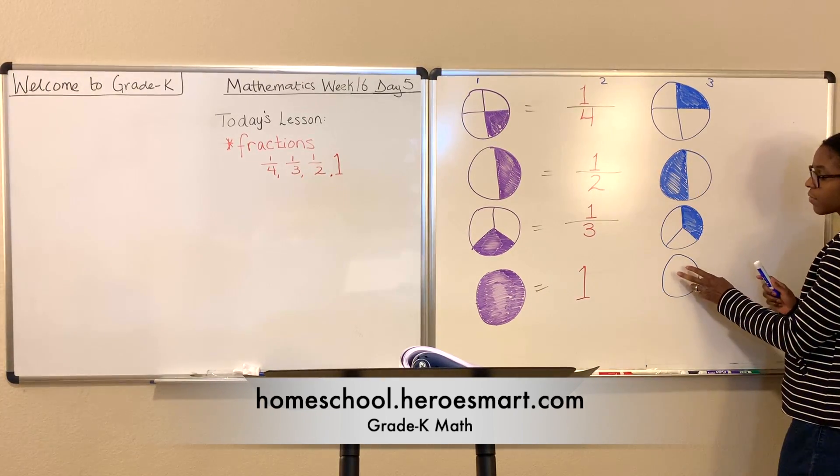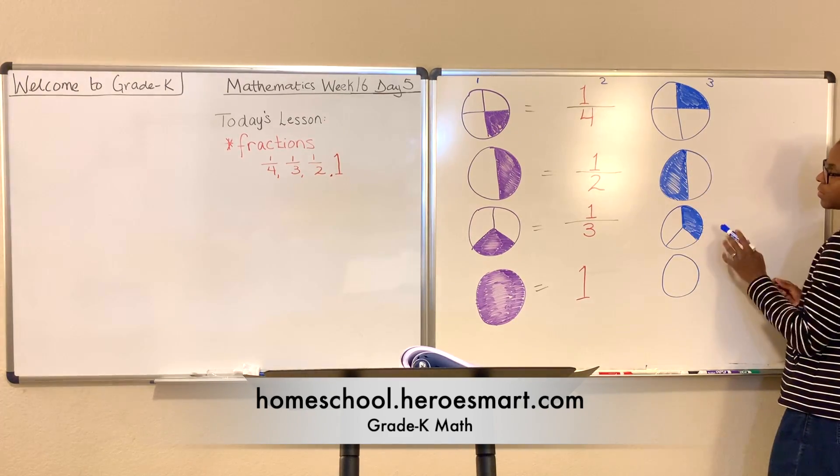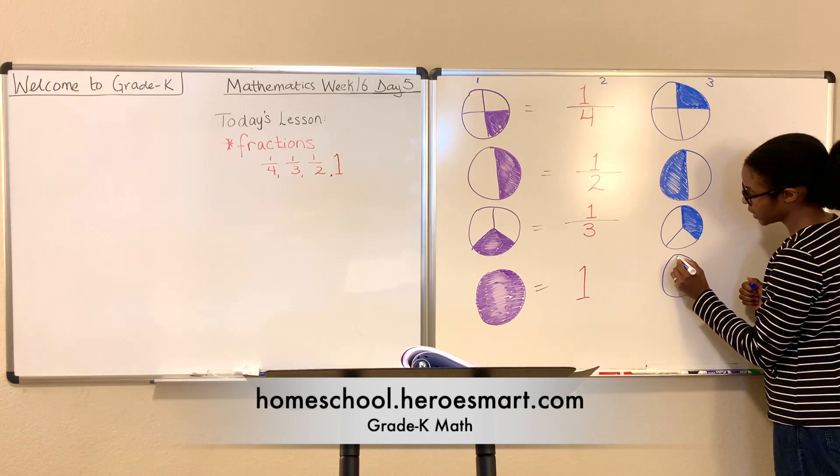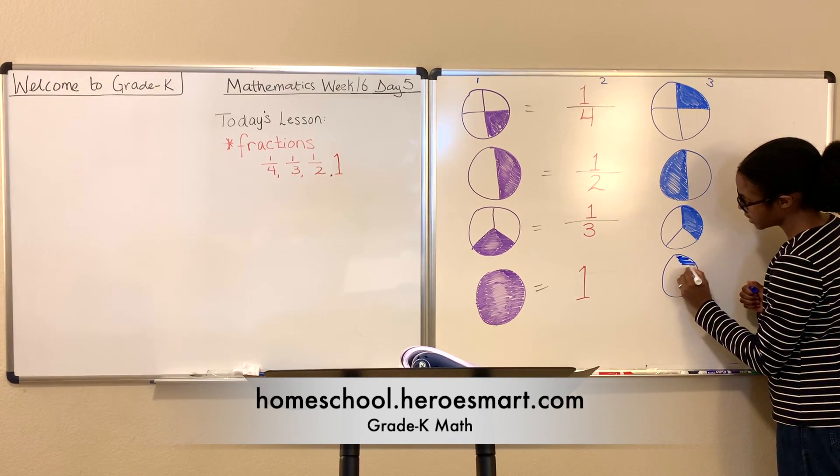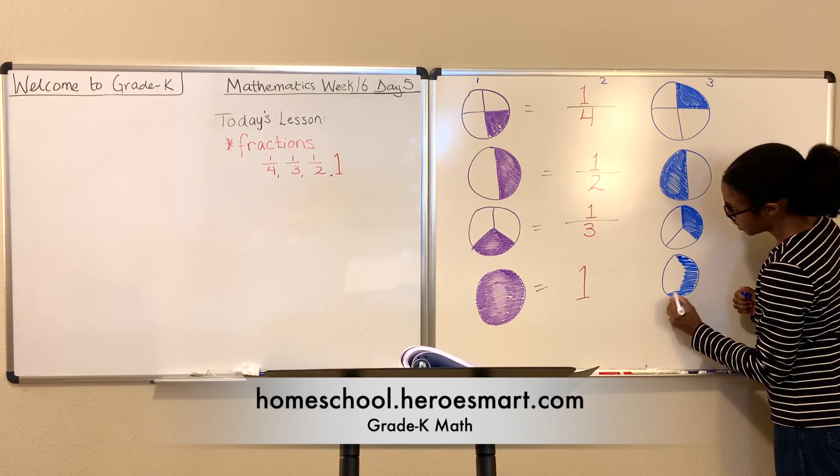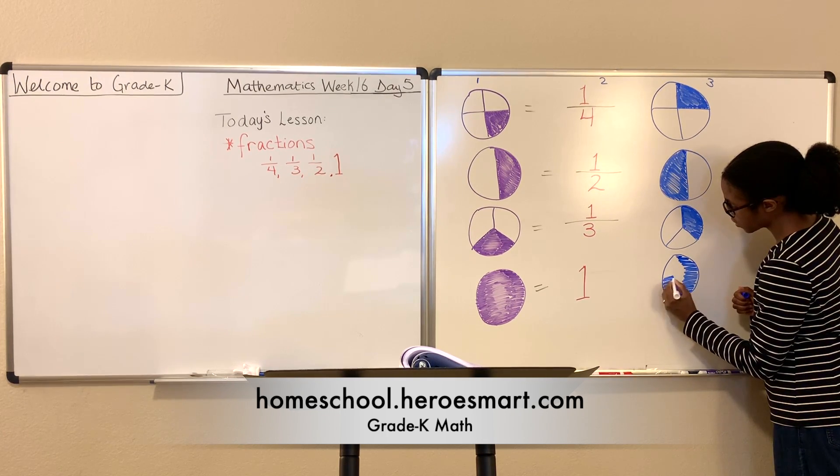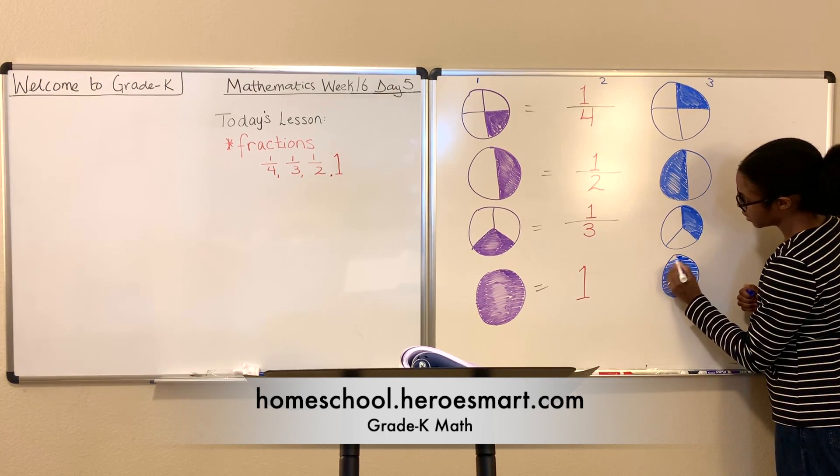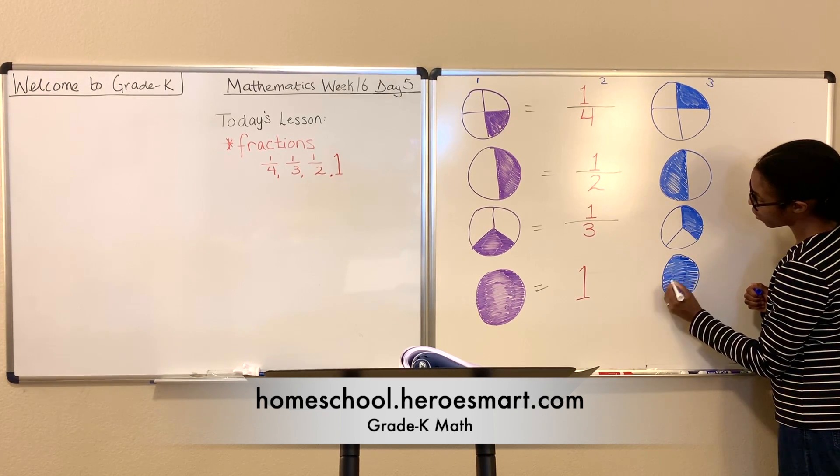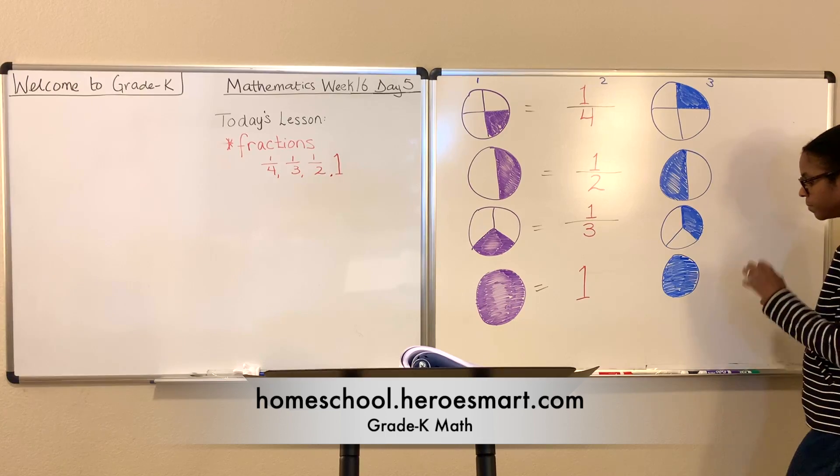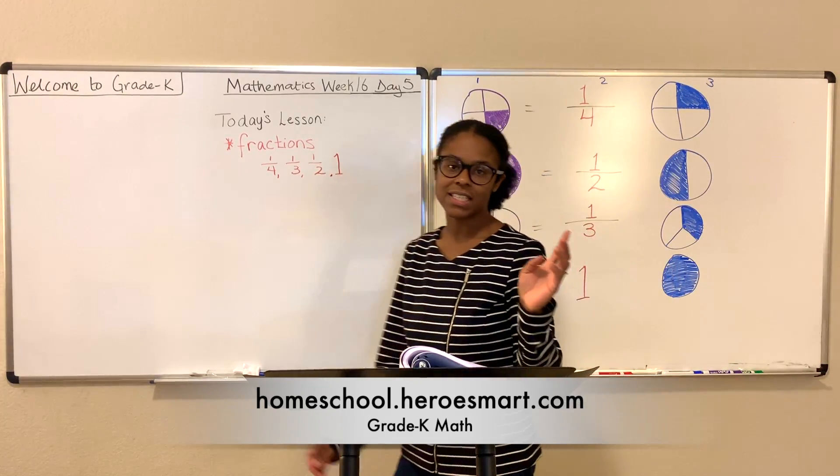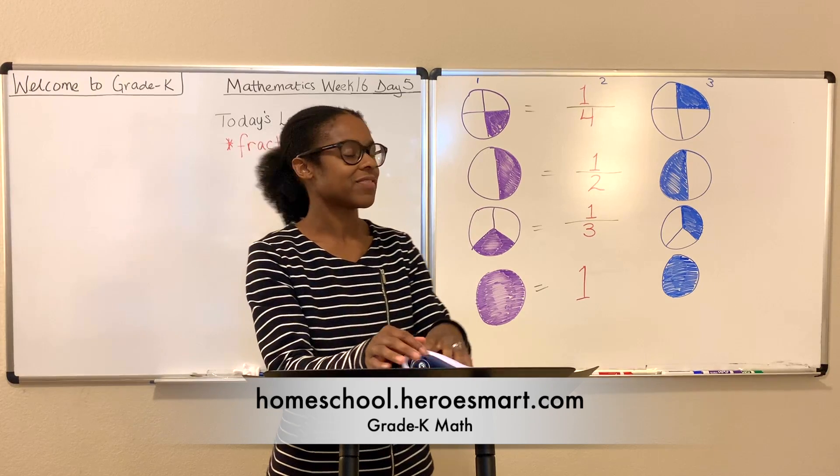Now let's make this row, or this column, column 3, reflect the same as the pie on the far left side. So let's go ahead and shade this in. Shade, shade, shade, until the whole circle or pie is filled in to reflect that this whole thing is shaded. And that, boys and girls, is how you complete your fractions for today.